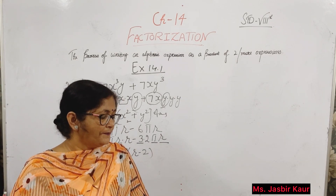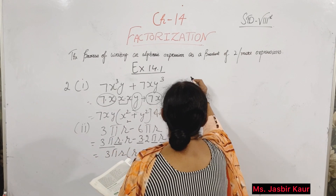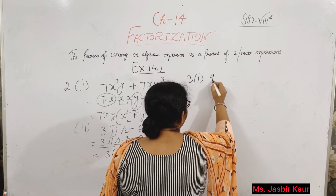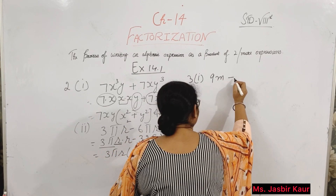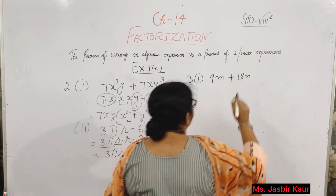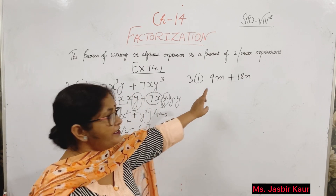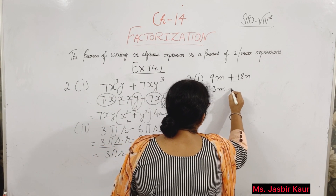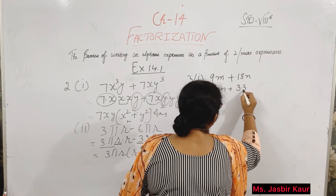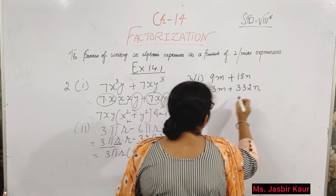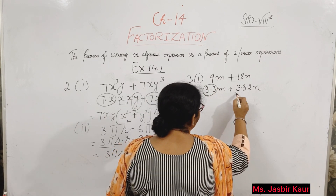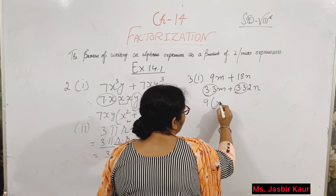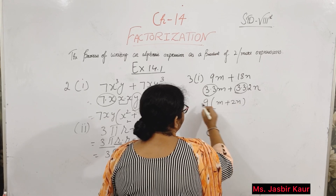Third question, first part: 9m plus 18n. Prime factorization of 9: 3 threes are 9. And 9 twos are 18. So 9 is the common number. Answer is 9 into (m plus 2n).